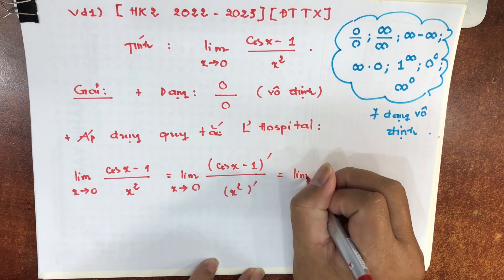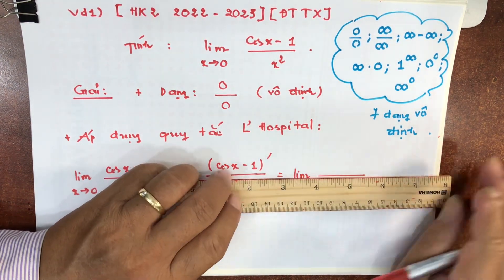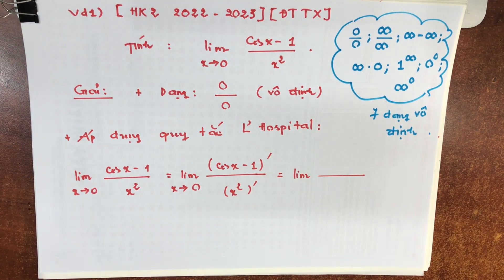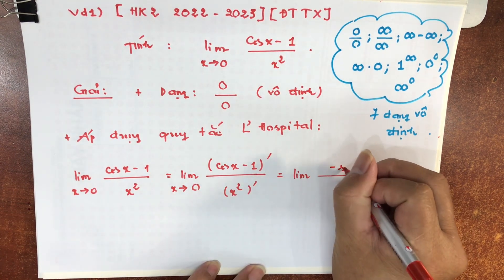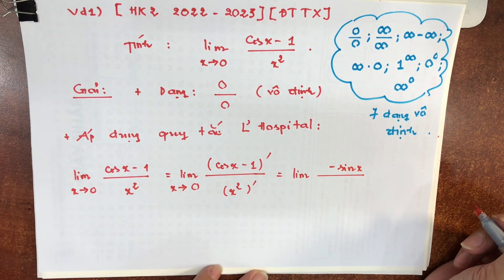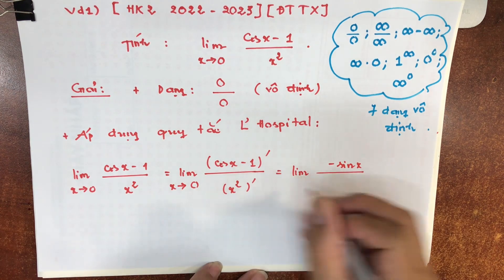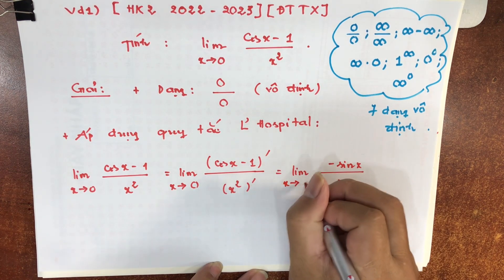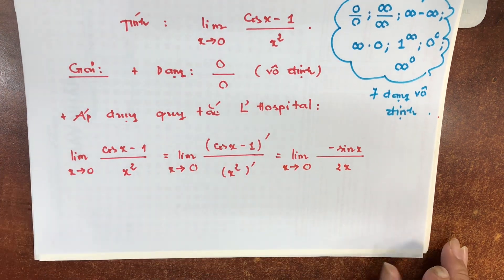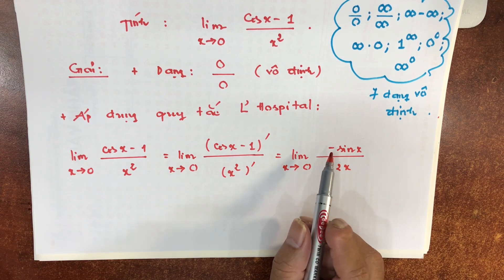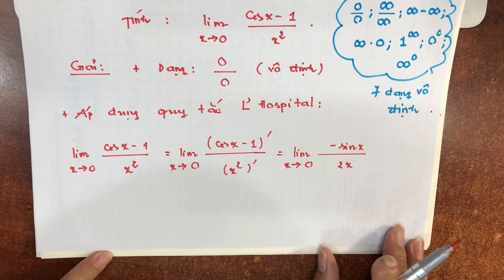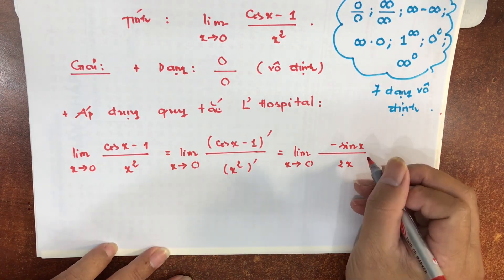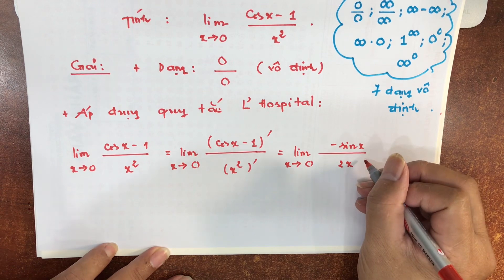Đạo hàm của cot x bằng trừ sin⁻² x (tức là -1/sin²x). Cả lớp biết rằng các công thức đạo hàm của hàm một biến số thì phải thuộc. Dưới mẫu x² đạo hàm bằng 2x. Nhân đây cũng nhắc thêm với cả lớp: bảng công thức đạo hàm và bảng công thức tích phân của hàm một biến số thì chịu khó thuộc nhé — đề thi cuối kỳ của mình là đề đóng, không được xem tài liệu.